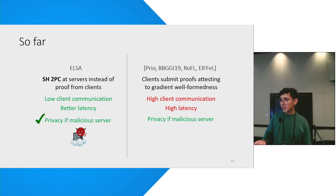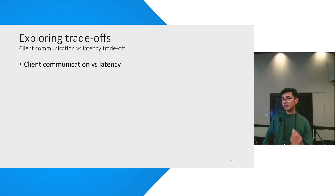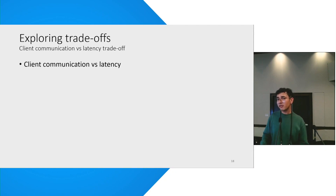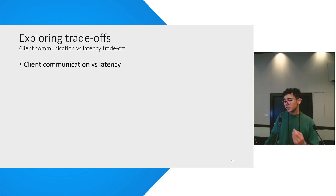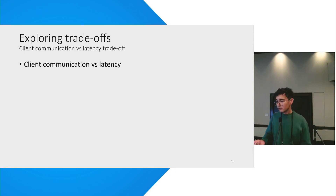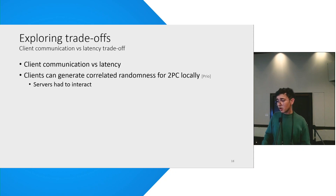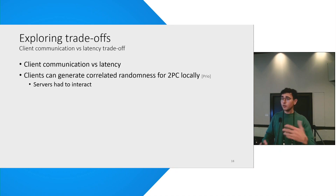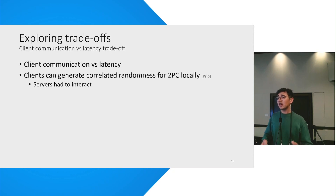For the next couple of minutes, I want to talk about the trade-off that is at the core of our protocol — client communication versus latency. The question is: can we give up some of the client communication if we can make our protocol much faster? The place where it shows up is the 2PC between the servers. The servers need a lot of correlated randomness, and if the servers generate it themselves, they incur a lot of communication and it's expensive. But the same job can be done by a client much more efficiently — locally — and the client can just stream these to the servers as they do the 2PC.